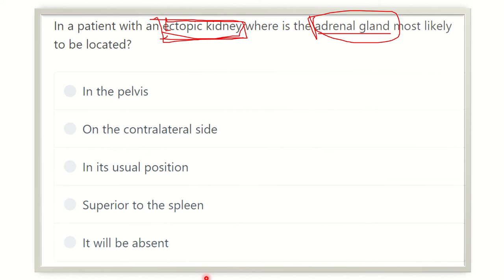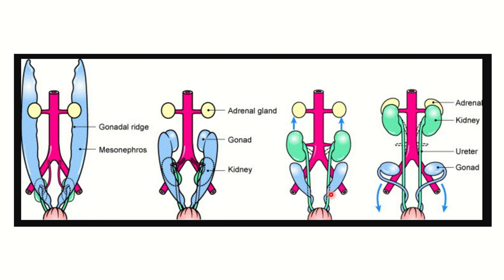This picture is quite enough to answer the question. We can see the gonadal ridge, which is mesonephric, and the kidney lying in the lower pelvic area on both sides. We can also see the adrenal gland sitting in the upper part of the posterior abdominal wall, while the kidney is still in the pelvic area.